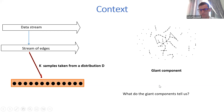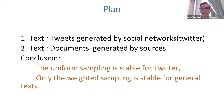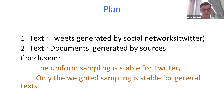We will show what the giant component tells us. We focus on two kinds of streams: first, tweets generated by a social network like Twitter, and second, documents generated by sources. The conclusion is that if we take uniform samples, it tells us something about the tweets, but for text documents, it is necessary to do weighted sampling. Otherwise the reservoir is not stable. In both cases, we can classify based on samples.